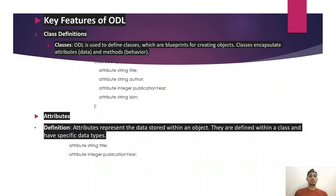Key features of ODL: First, Class definition — ODL is used to define classes, which are blueprints for creating objects. Classes encapsulate attributes (data) and methods (behavior). Attributes represent data stored within an object; they are defined within a class and have specific data types.